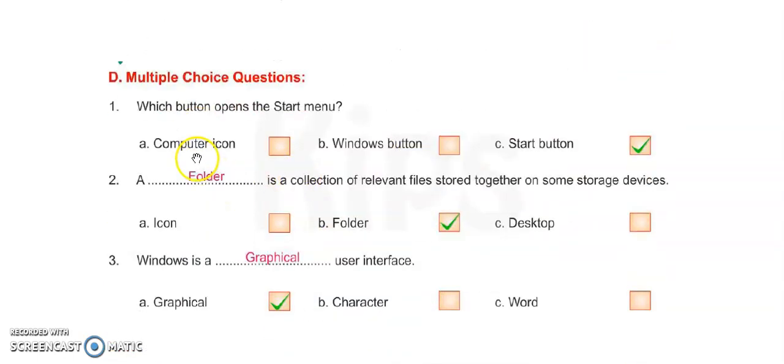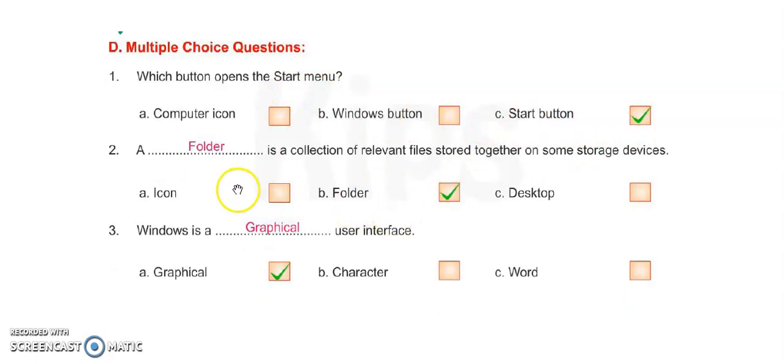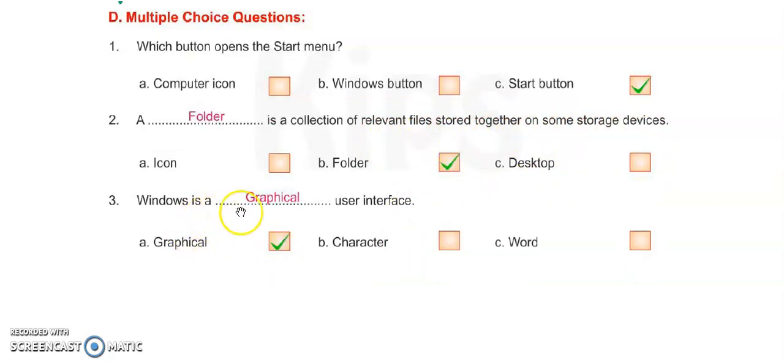Exercise C I will give you later. Now we have to do exercise D, multiple choice questions. Which button opens the start menu? It is the start button. You have to tick right here. A folder is a collection of relevant files stored together on some storage devices. Windows is a graphical user interface. You have to tick here.